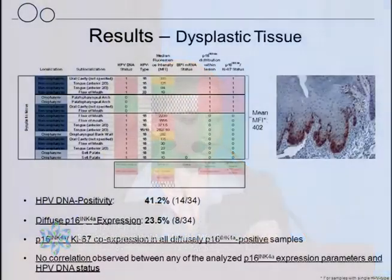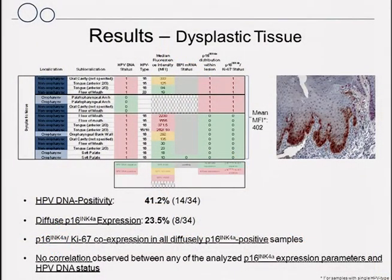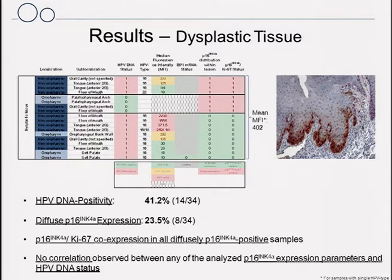In the dysplastic tissue, HPV DNA was detected in 41.2% of cases, and diffuse P16 expression was observed in 23.5%. As with the head and neck squamous cell carcinomas, all samples showing diffuse P16 expression also had cells staining dual positive for both P16 and Ki67. No correlation was observed between any of the analyzed P16 expression patterns and HPV DNA status, and it will be interesting to analyze the E6 transcripts to identify those samples that are biologically HPV active.